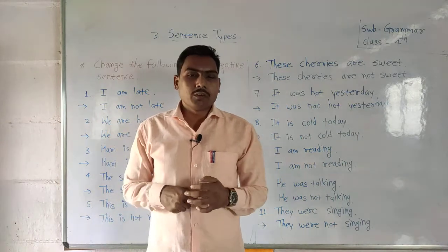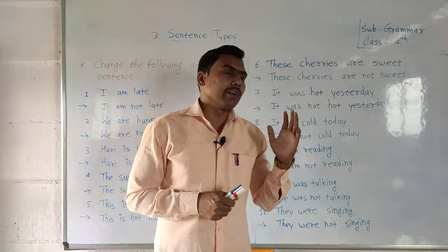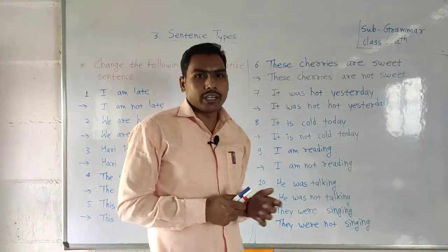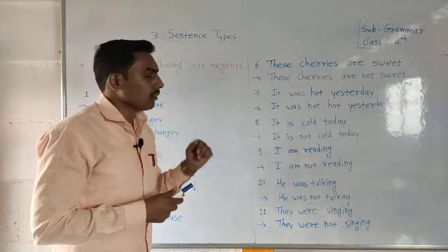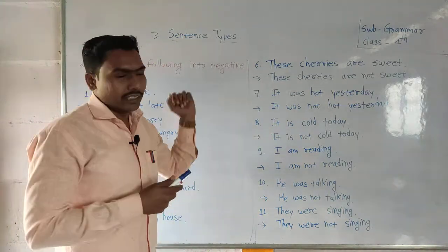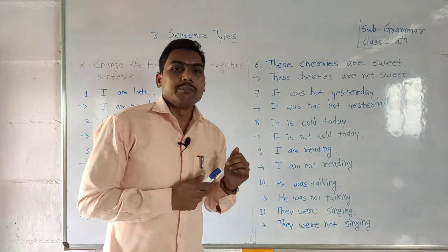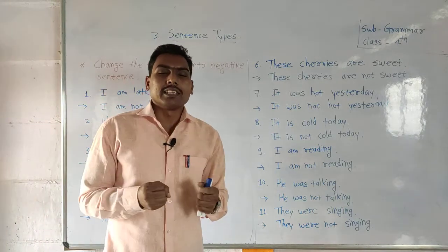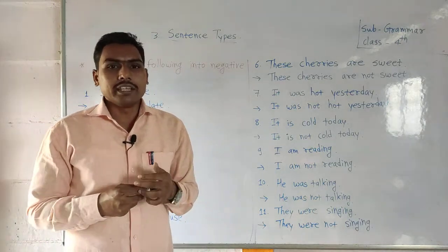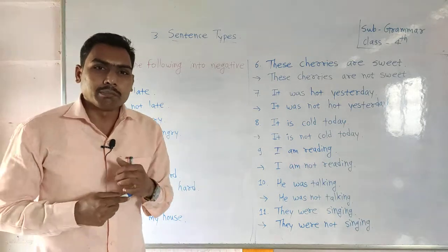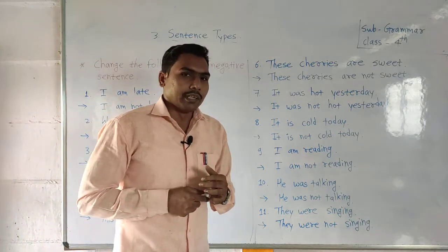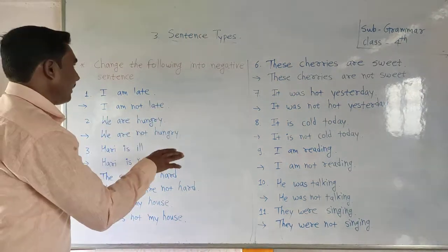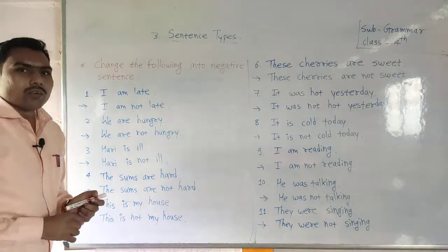Good morning students. Today we are going to start the remaining part of our third lesson. Our lesson name is sentence types, class four. In previous lessons we learned about the types of sentences: declarative sentence, imperative sentence, interrogative sentence, and exclamatory sentence. Related to that, we are going to solve one question here.